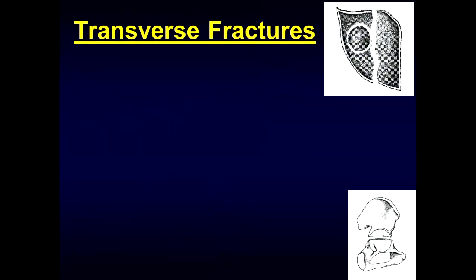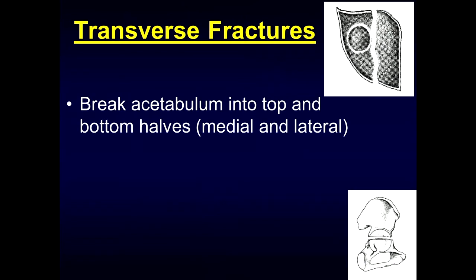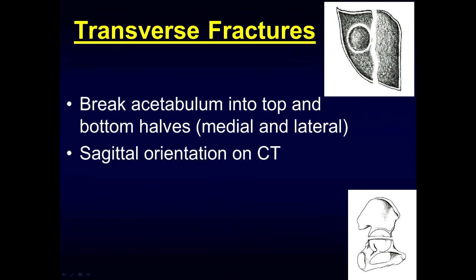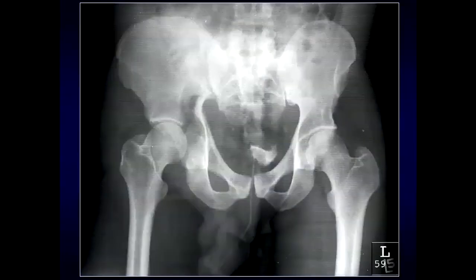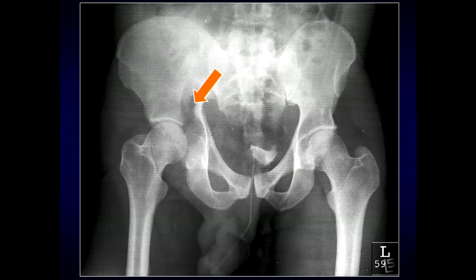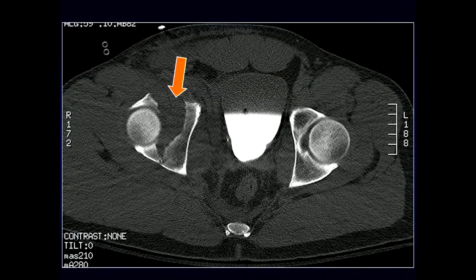Transverse fractures involve a break in the acetabulum into top and bottom halves — essentially medial and lateral portions of the acetabulum. They have a sagittal orientation on CT and do not disrupt the obturator ring unless it's an associated type. On CT, you can see displacement into both medial and lateral halves in this type of injury.